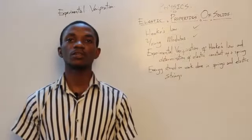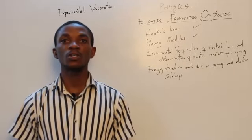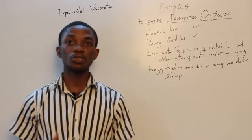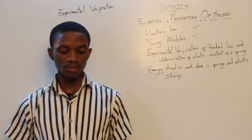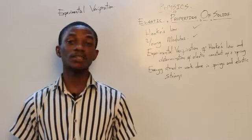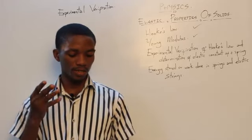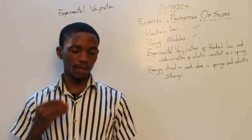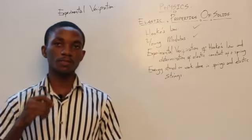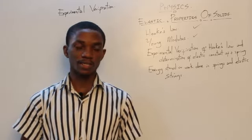Now, experimental verification of Hooke's Law and determination of the spring constant. The diagram on your screen shows the experimental setup. You can see the metre rule and the retort stand, the spring being connected, and a pointer attached to the spring. Different loads are being placed on the spring's hook.